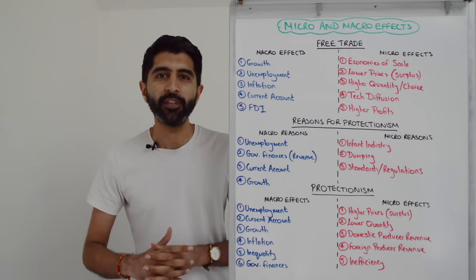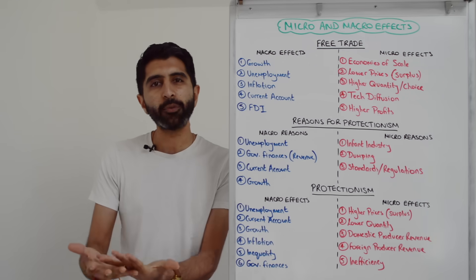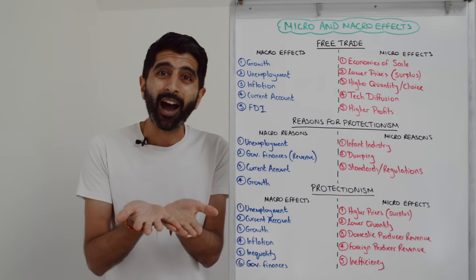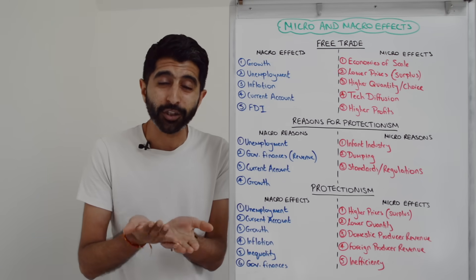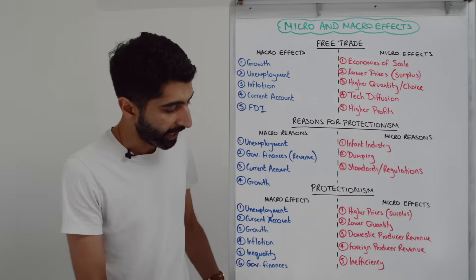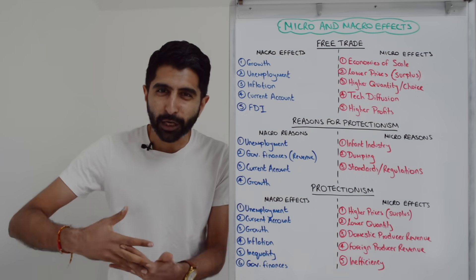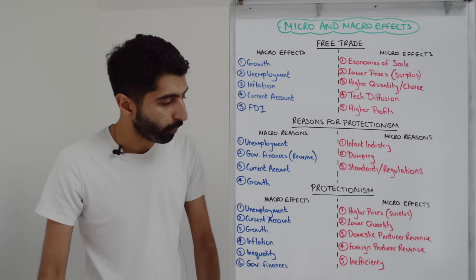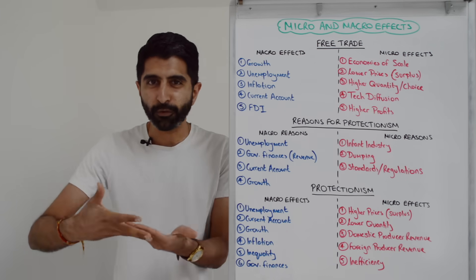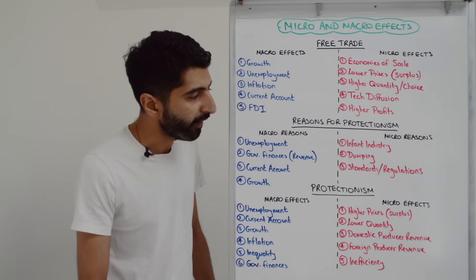However, protectionist measures like tariffs and quotas that increase the price of imports can be inflationary. If they're imposed on imports of raw materials or inputs, firms importing those will see higher costs of production — link that to cost-push inflation rising in a country. If tariffs are highly regressive, there's a risk of income inequality rising. But also tariffs that raise revenue for the government can help to improve government finances.